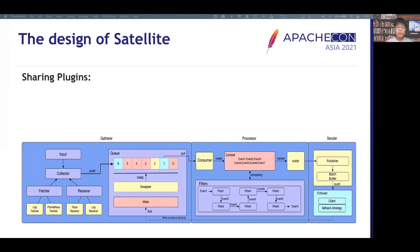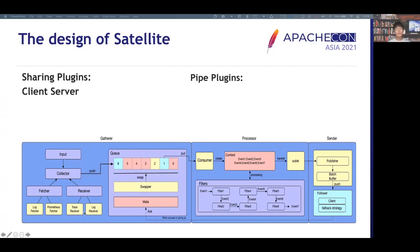The plugin system in the satellite has two categories: sharing plugins and pipe plugins. One data collection channel is called a pipe. Each pipe is constructed with a Fetcher, Processor, and Sender. The sharing plugins are shared across different pipes and have only two plugin types: client and server. The client is used to connect to external services in the Sender, and the server plugin is used by the receiver plugin to receive data in the Fetcher.